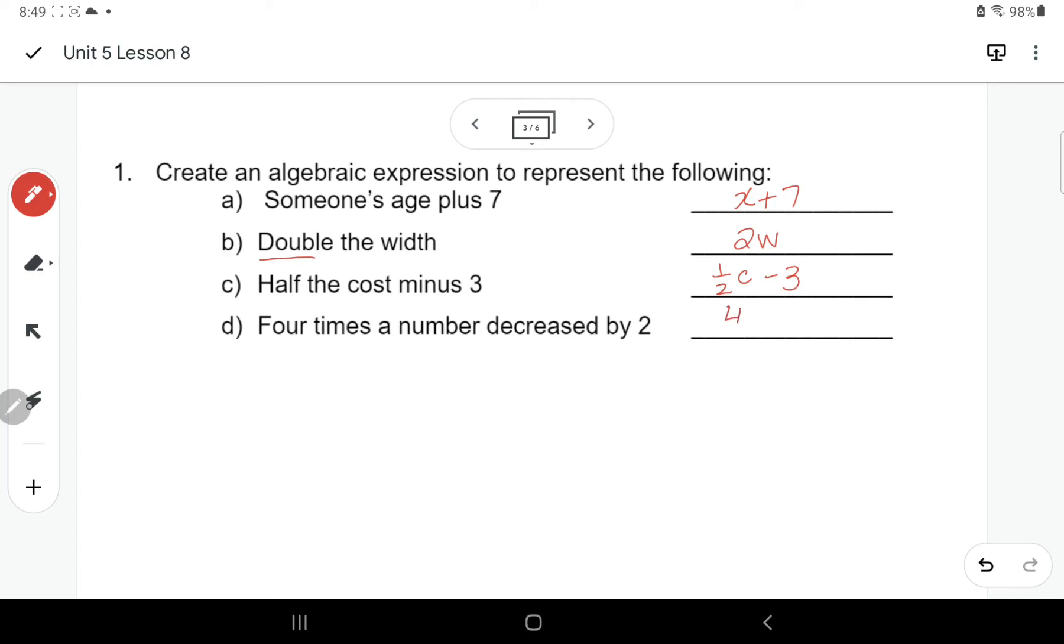Four times the number. So four times my number decreased by 2. That means minus 2. So these are the kinds of words that we're going to have to watch for. Like plus, double, half, those kinds of things. Decreased. And realize what operations they represent.